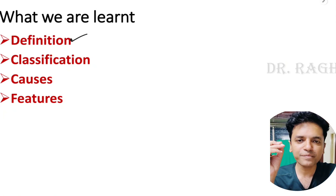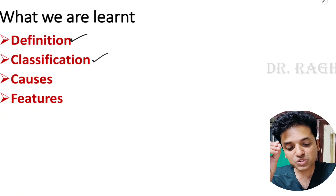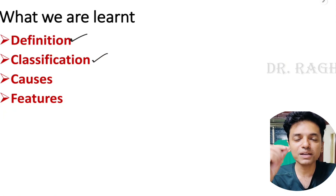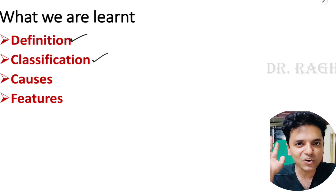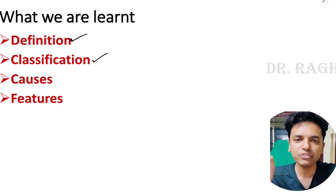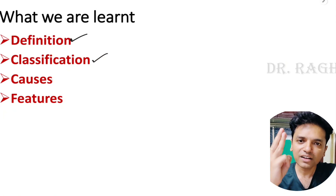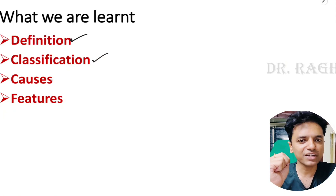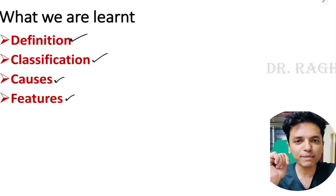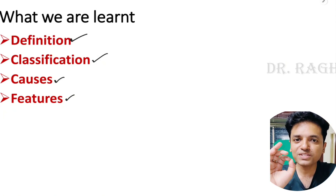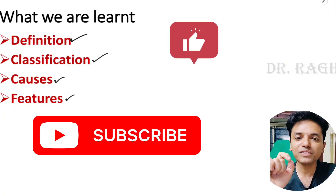In summary, we covered the definition of hypoxia and anoxia, the parameters for classifying hypoxia, and the causes and features of all four types: hypoxic hypoxia (including high altitude, lung disorders, thoracic cage issues, respiratory membrane disorders, and V/Q mismatch), anemic hypoxia, stagnant hypoxia, and histotoxic hypoxia. If this video was helpful for your examinations, please like, subscribe, and share.